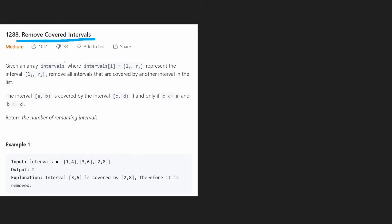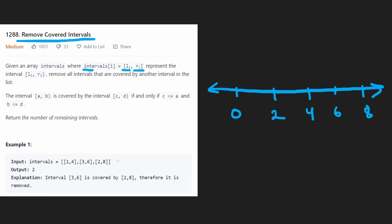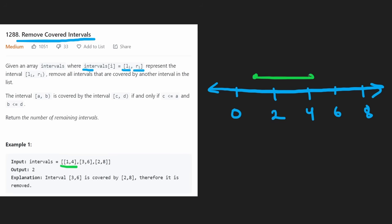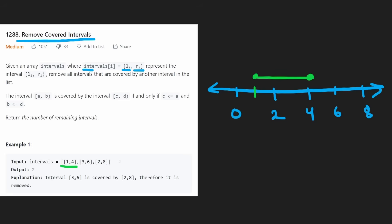We're given an array of intervals and each interval is basically two points, a left point and a right point. So if we had a number line, an interval like one to four would go from point one all the way to point four. It's just a one-dimensional line and we have a bunch of one-dimensional intervals.